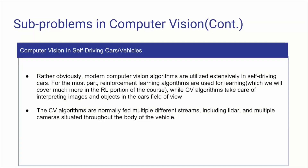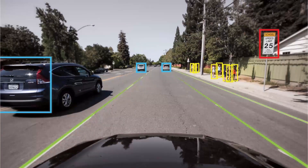Computer vision in self-driving cars — modern algorithms are extensively used here. They combine reinforcement learning and computer vision algorithms, where CV algorithms act as sensory input and reinforcement learning interprets that input, converting it into states and actions. This includes images from cameras, lidar, position information, and relationships to other cars. The self-driving car then makes decisions about whether to stay straight, brake, accelerate, or change lanes — all on a millisecond timescale.